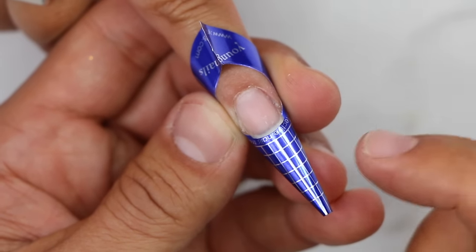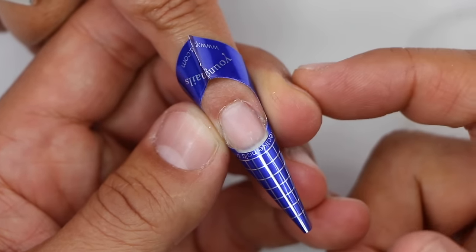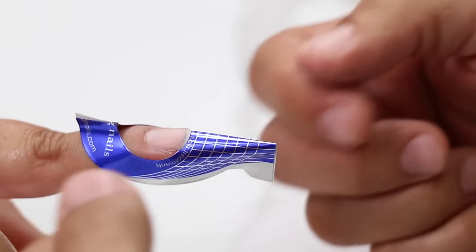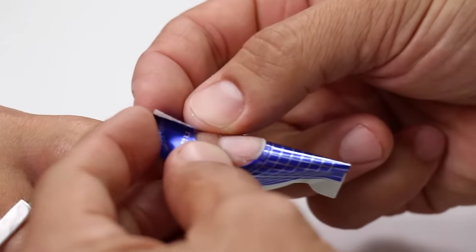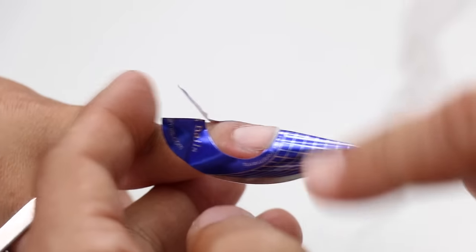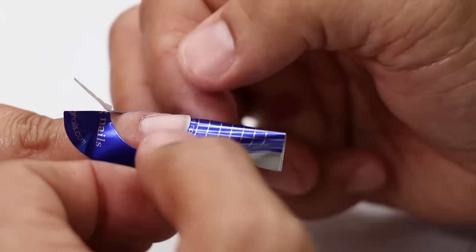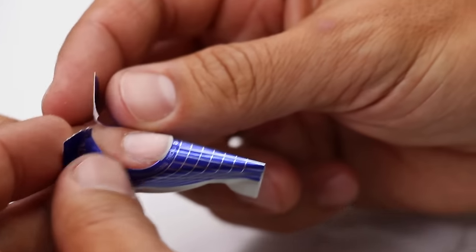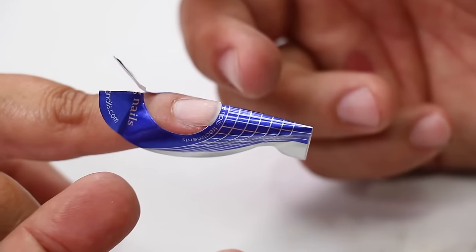So the problem with this technique is that it not only takes too long, it's inconsistent. Mel has actually some decent nail beds, but if you have somebody who has extreme C curve, or they don't have the corners underneath, it becomes an absolute nightmare. So what I want to show you is how to simplify things.